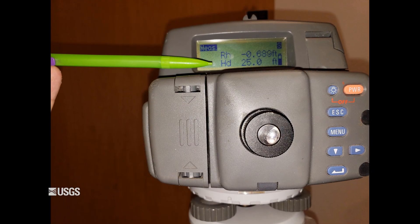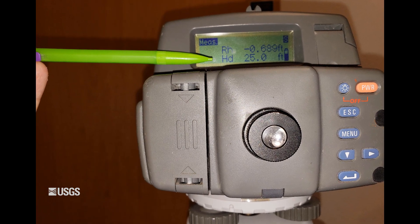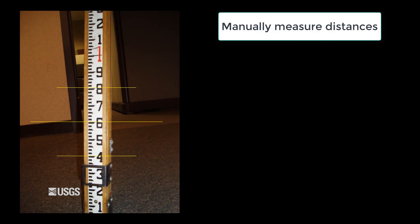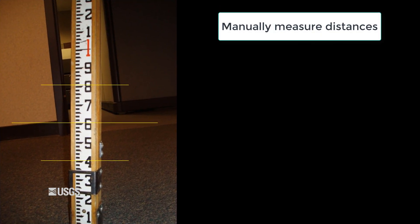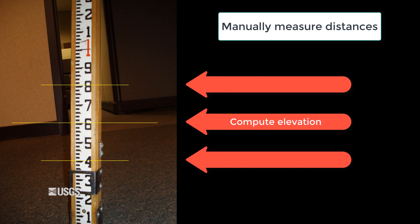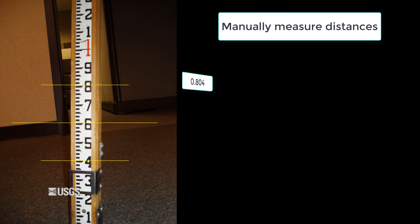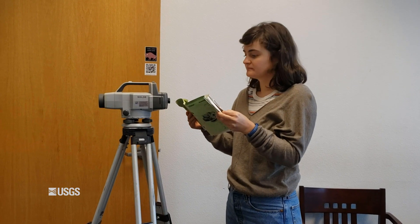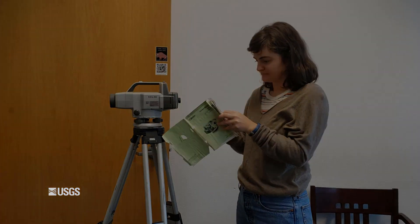I've been showing you how to measure distances using the electronic function on your instrument, but what if the battery dies? It's good to know how to measure distances manually. Take a look through the scope of the gun. If you read the rod using the middle line, you can compute the elevation. Have you ever looked at the top and bottom lines, though? Those are stadia lines that are used for determining a distance. Read and record the value from the top crosshair, then read and record the value from the bottom crosshair. Subtract the bottom from the top, multiply the result by 100, and that is your distance. However, if you use this method, make sure you check the user's manual for your particular gun, because some optics have a different multiplier.